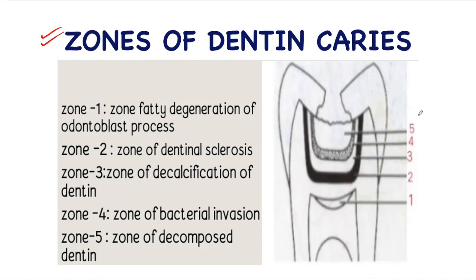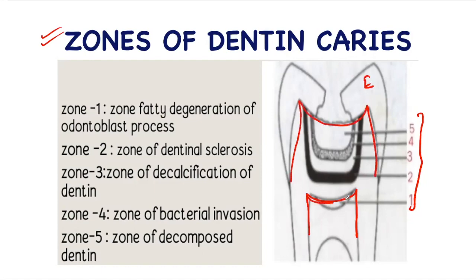In dentine caries, there are five distinct zones beginning from the pulpal side. This is the pulp of the tooth, this is dentine, and this is enamel. Beginning from the pulp of the tooth and proceeding towards the dentinal surface, the first zone is the zone of fatty degeneration of odontoblastic process.